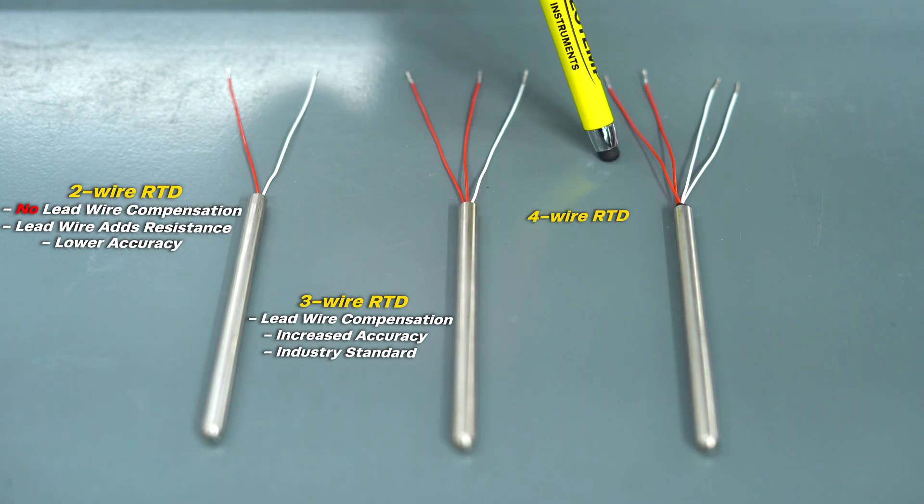A four wire RTD fully isolates the resistance of the RTD element from the resistance of the lead wire, and it's recommended for applications requiring the highest accuracy.